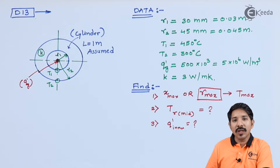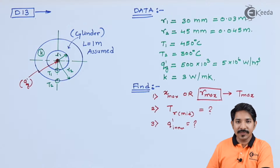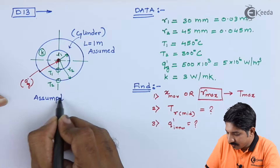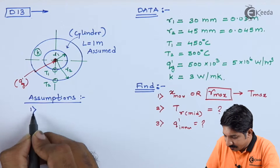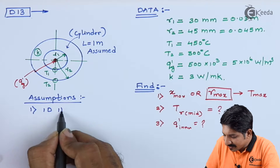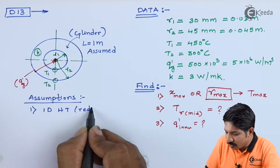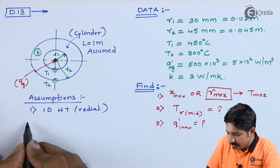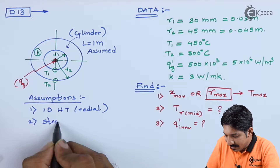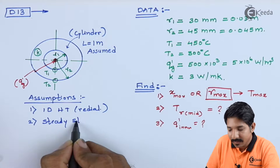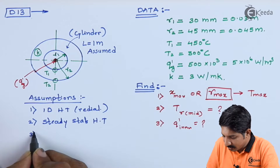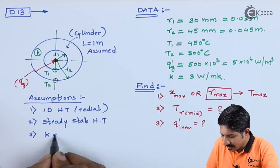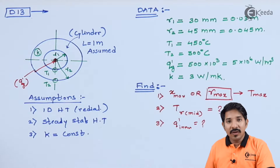We cannot solve any problem without listing assumptions. The assumptions are: (1) one-dimensional heat transfer — radial only; (2) steady-state heat transfer; and (3) thermal conductivity of the material is constant.